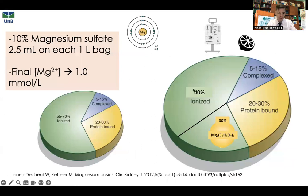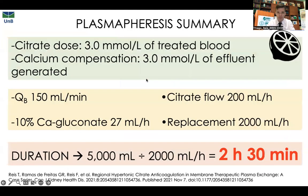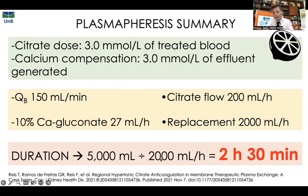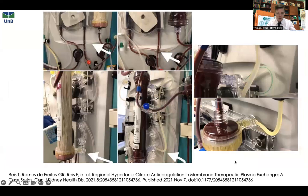In summary, our protocol uses a citrate concentration of 3 mL per liter, calcium compensation of 3 mL per liter of effluent generated, blood flow of 150 mL/min, calcium gluconate replacement at 27 mL/hour, citrate flow at 200 mL/hour, and replacement flow at 2000 mL/hour. For a 70 kg patient requiring 1.5 volemia exchange, approximately 5 liters of plasma are needed. At 200 mL/hour replacement rate, the therapy takes 2 hours and 30 minutes.